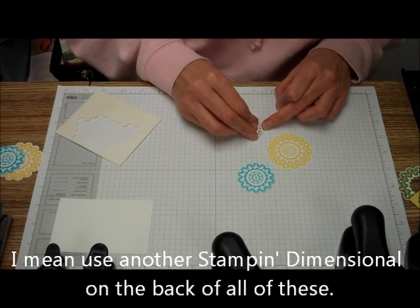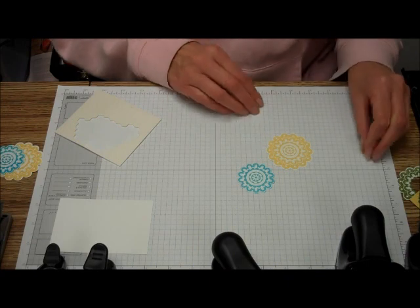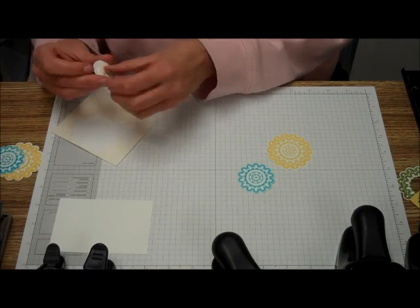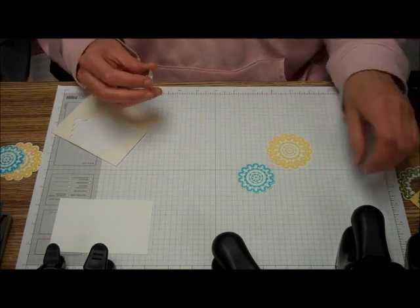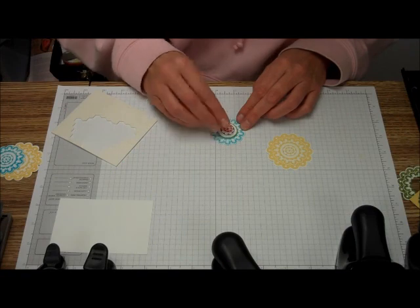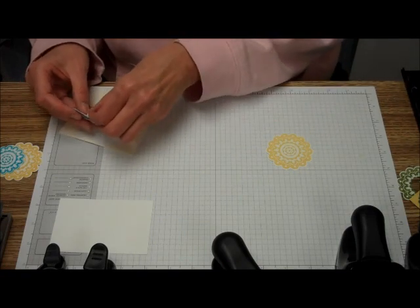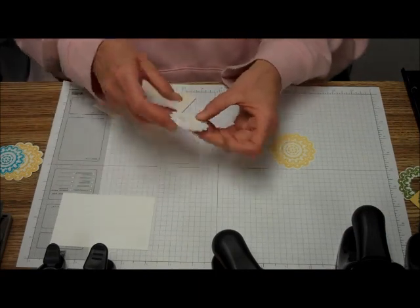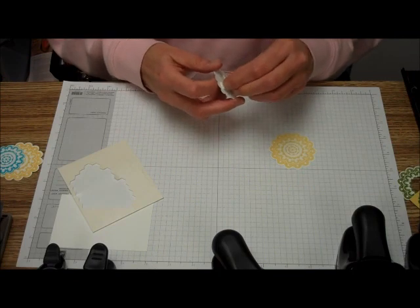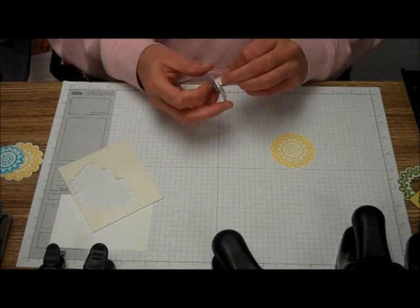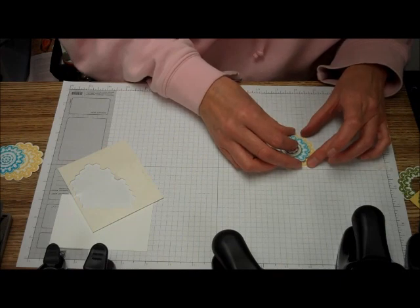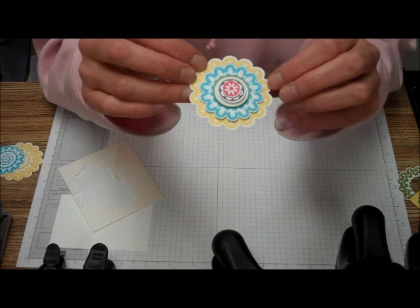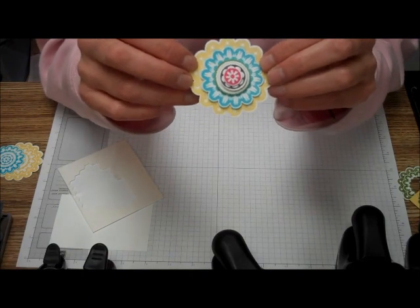Put one on there, put that on the Tempting Turquoise, and I'll put two dimensionals on the Tempting Turquoise. Just line that up. And there you have our quintessential flower. You can also find this in the Annual Catalog on page 110.